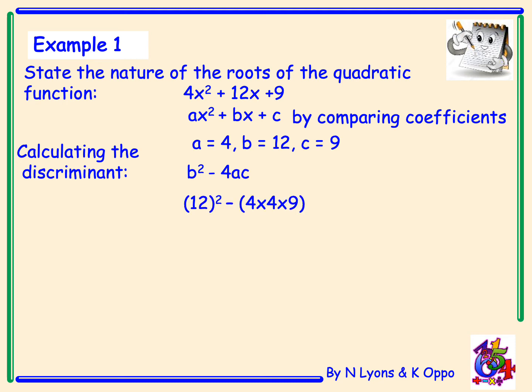Substituting in: b is 12, so I have 12 squared minus, and I always put brackets in to calculate 4 times a times c — that helps in case a double negative comes in. So it's minus brackets 4 times 4 times 9. Doing the maths gives me 144 minus 144. So the discriminant equals zero. That means I've got two equal real roots.